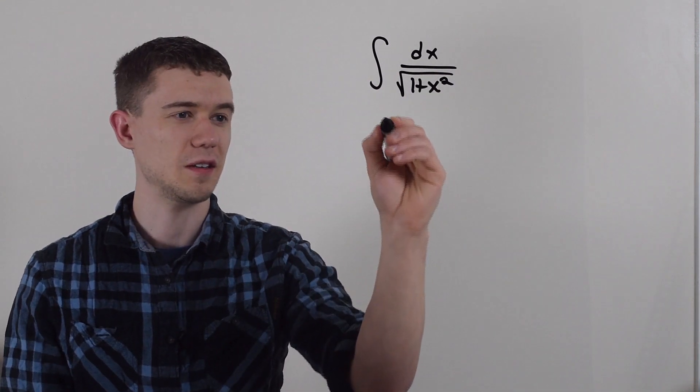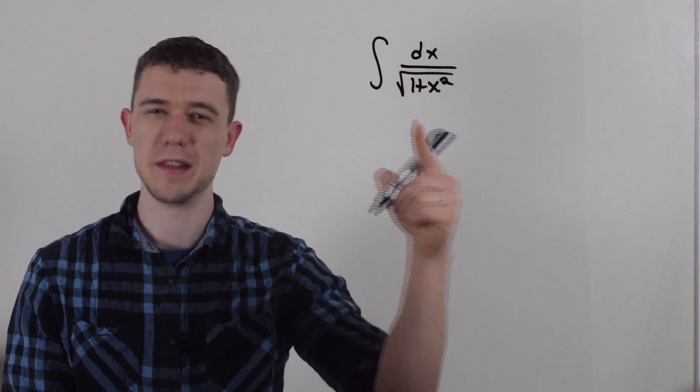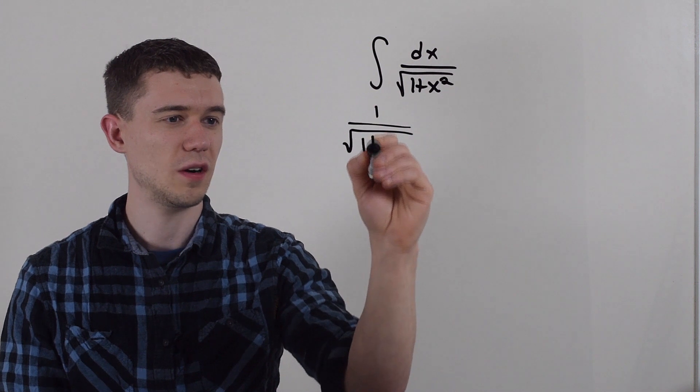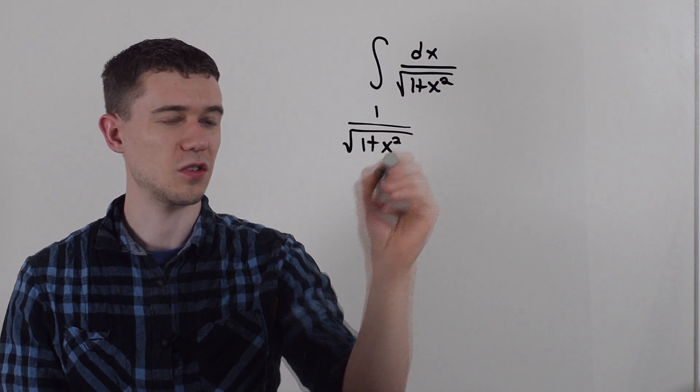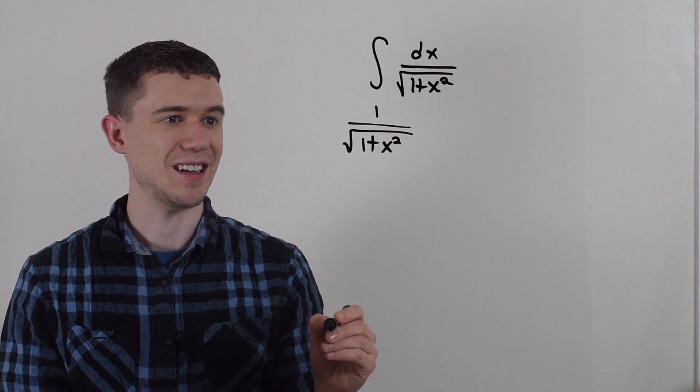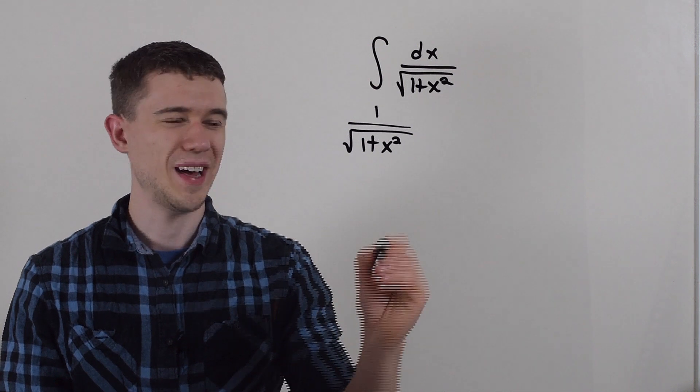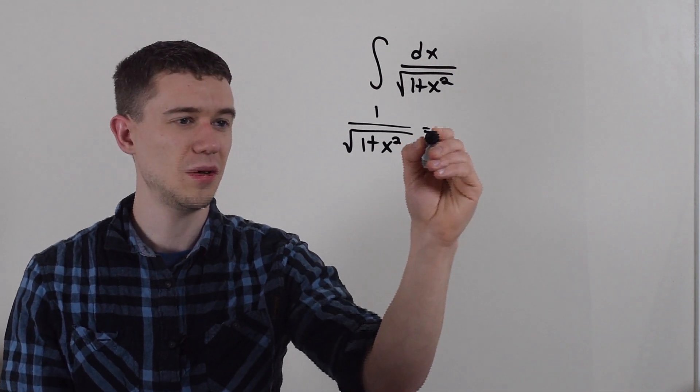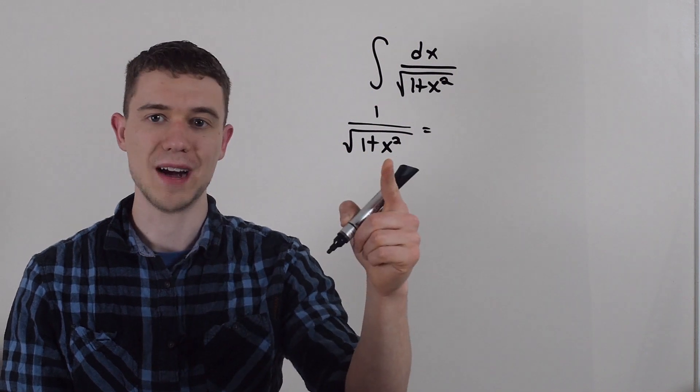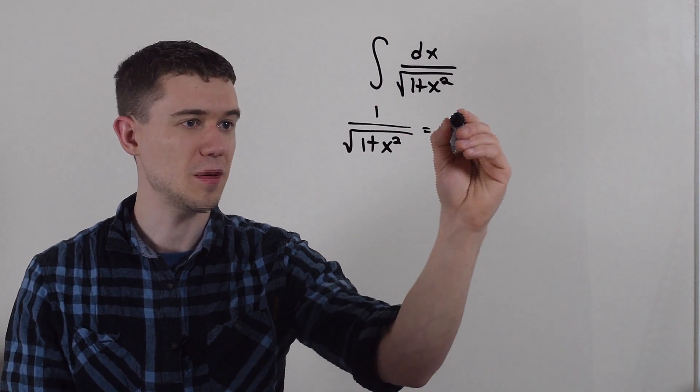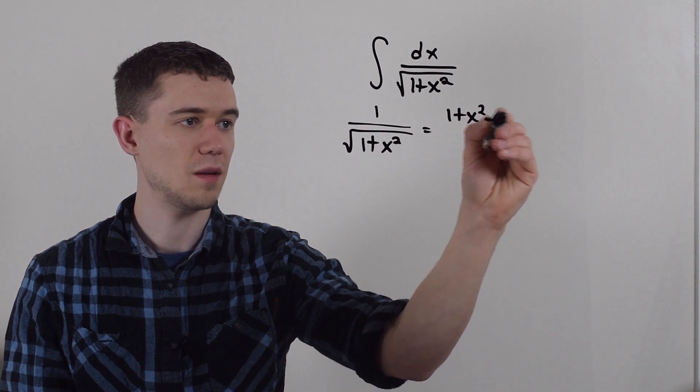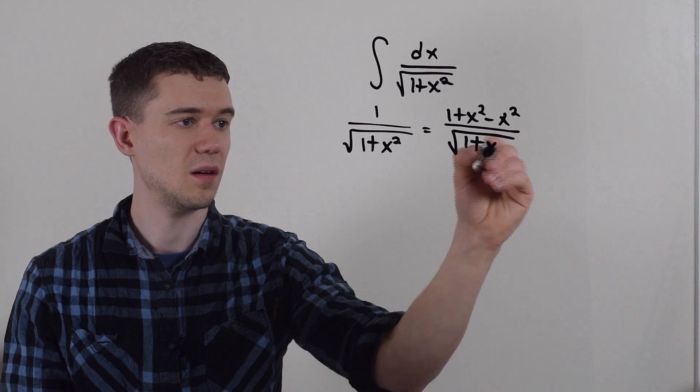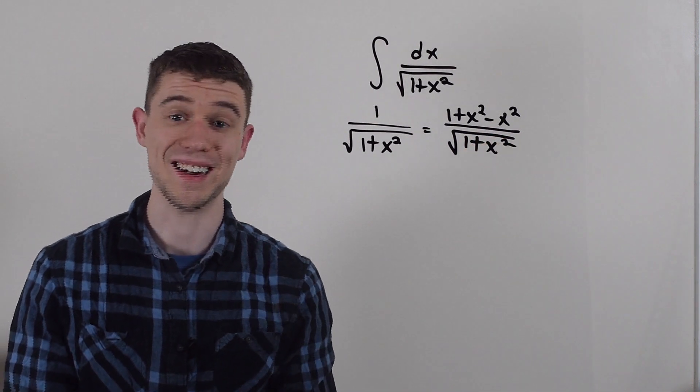I think I'm just going to start working with the integrand, and at the very end I'll integrate it. So I have this 1 over square root of 1 plus x squared, and what I'm going to do now is I'm going to add 0. So I'm going to add and subtract x squared to the numerator. I'll make this 1 plus x squared minus x squared. Nothing wrong there. I'm just adding 0.